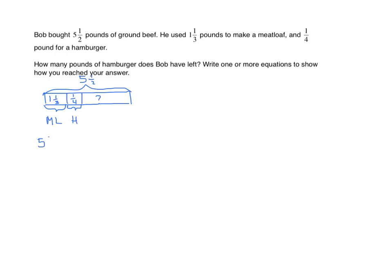We have our whole, five and one-half. We're going to subtract the sum of one and one-third and one-fourth. We'll work with the expression in the parentheses first. So we have one plus one-third. We decompose our mixed number. And now we're going to add our fractions first, finding our common denominator. Notice that I keep copying my five and one-half all the way through.